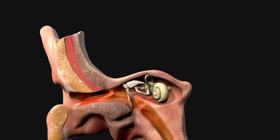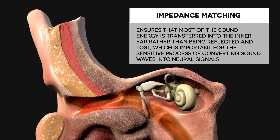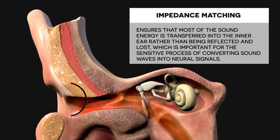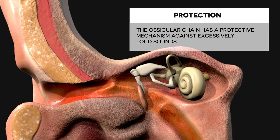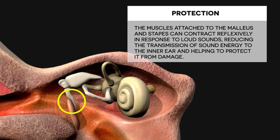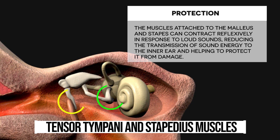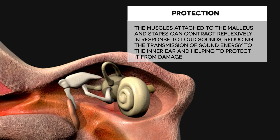The ossicles also play a role in impedance matching between the air in the external auditory canal and the fluid of the cochlea. This ensures that most of the sound energy is transferred into the inner ear rather than being reflected and lost, which is important for converting sound waves into neural signals. Additionally, the tensor tympani and stapedius muscles attached to the malleus and stapes can contract reflexively in response to loud sounds, reducing transmission of sound energy to the inner ear and helping to protect it from damage.